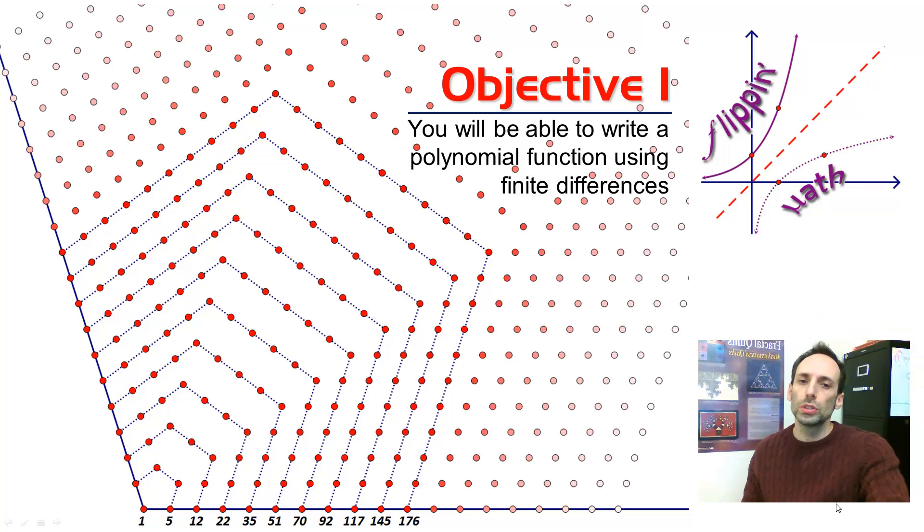We've been talking about Objective 1, looking at a sequence of numbers and seeing what their finite differences were. What that meant was you're checking to see how much each one of those terms is going up by. And you keep doing that until you find something that's constant, until they stop going up by a different amount each time.